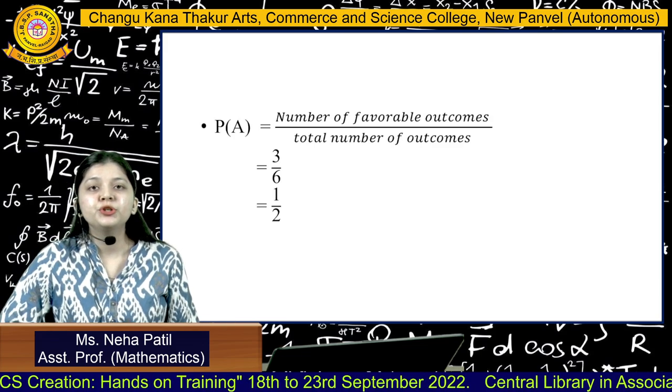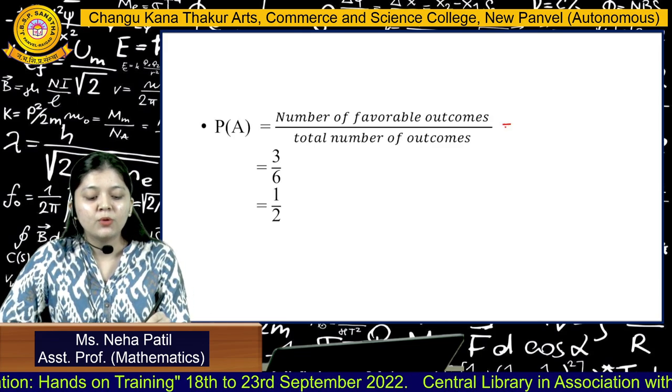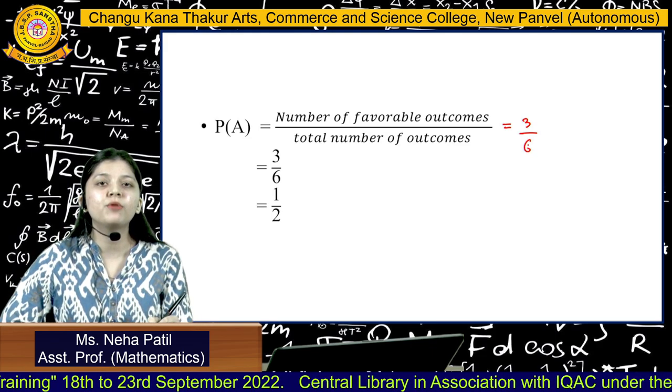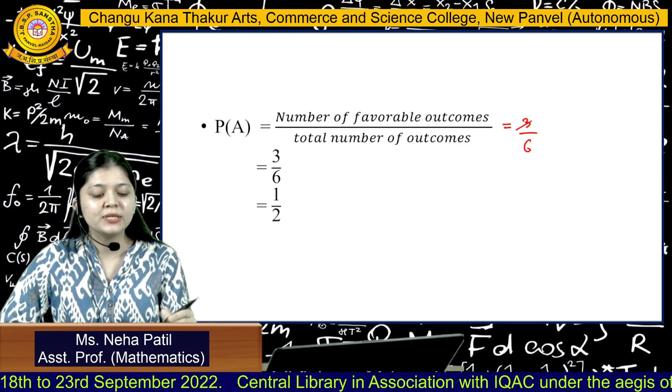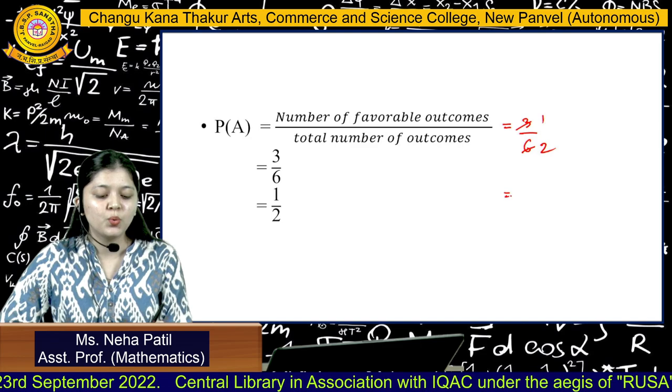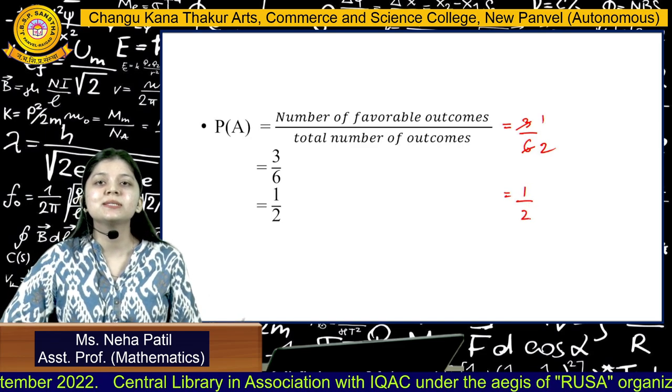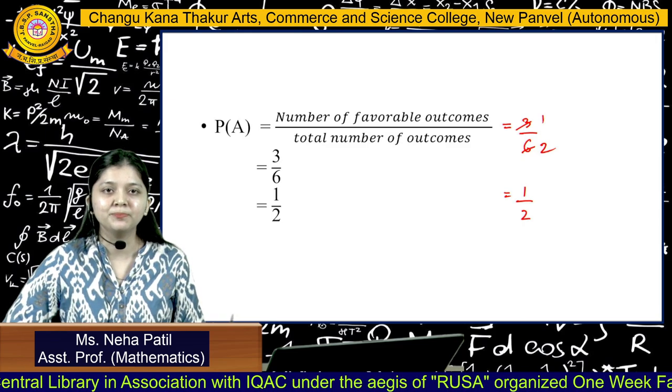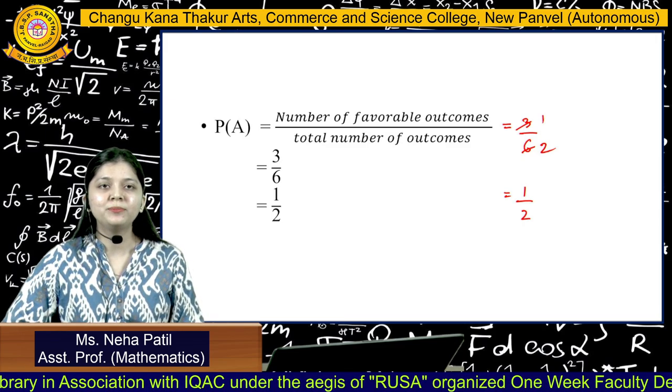The probability of obtaining a number greater than 3 would be, if we substitute into the formula, the number of favorable outcomes that we have is 3 divided by the total number of outcomes which is 6. Reducing it by 3, we get the answer as 1 by 2. This is our probability for finding out the number greater than 3. I hope this is clear with you all. Thank you.